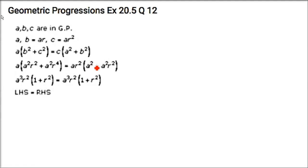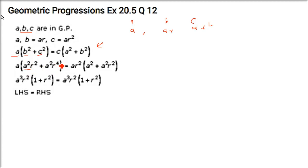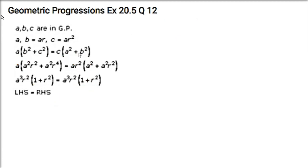A, B, C are in GP — we have to prove five sub-parts. For each, substitute A = A, B = AR, C = AR². Part 1: Prove A(B² + C²) = C(A² + B²). Substituting the values, from the left side you can take A²·AR² common giving A³R², and from the right side also A³R², with (1 + R²) on both sides. So left-hand side equals right-hand side.